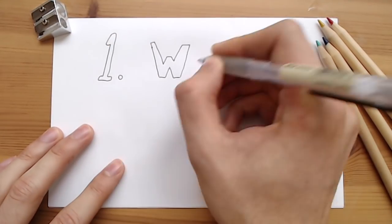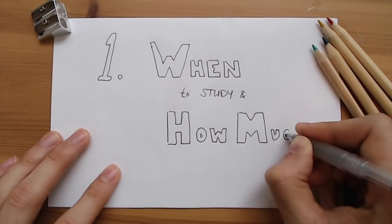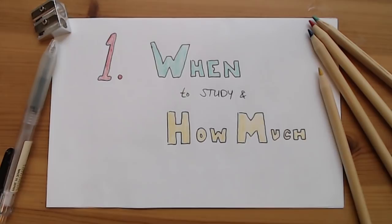In particular, I'm going to look at five key ideas from cognitive science that are easy to miss but are extremely important if you want to study effectively. So the first question to answer when you start planning your studying schedule is to ask yourself when you should study and how much. The obvious answer to this question is that you'll do better the more you study.